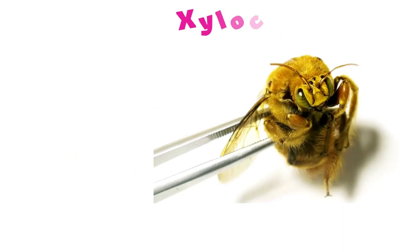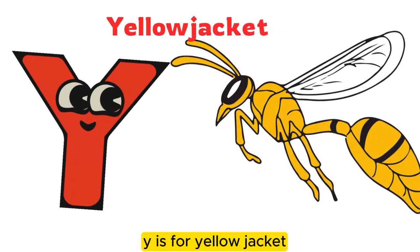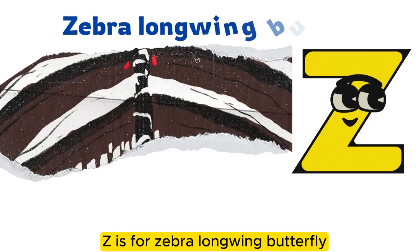W is for Water Strider. W-W-W-W-W-W, Water Strider. X is for Xylocopa. X-X-X-X, Xylocopa. Y is for Yellow Jacket. Y-Y-Y-Y-Y, Yellow Jacket. Z is for Zebra Longwing Butterfly. Z-Z-Z, Zebra Longwing Butterfly.